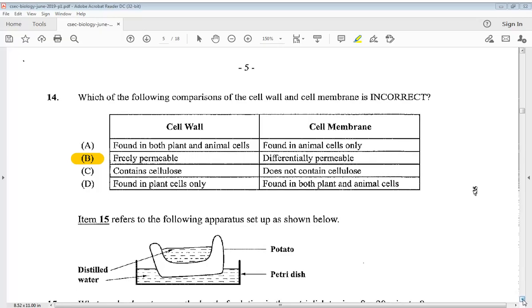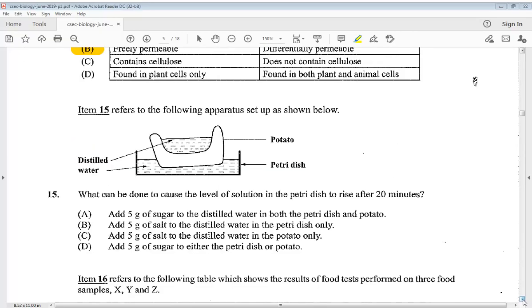Item fifteen refers to the following apparatus set up as shown below. What can be done to cause the level of solution in the petri dish to rise after 20 minutes? A, add 5 grams of sugar to the distilled water in both the petri dish and potato. B, add 5 grams of salt to the distilled water in the petri dish only. C, add 5 grams of salt to the distilled water in the potato only. The answer is C, add 5 grams of salt to the distilled water in the potato only.